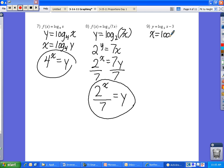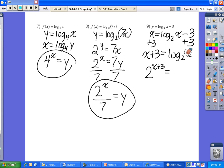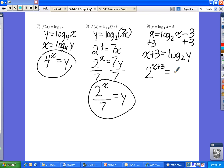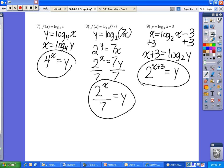For number 9, switch x and y. This one's a little unique because notice that I have this minus 3 and it's not in parentheses. So I'm not taking the log of x minus 3. I'm only taking the log of x. So I need to isolate this log part first, which means I first need to add 3. Now I have x plus 3 equals log base 2 of y. Now I can use the definition. 2 to the entire side of x plus 3 equals y. And now I'm done.